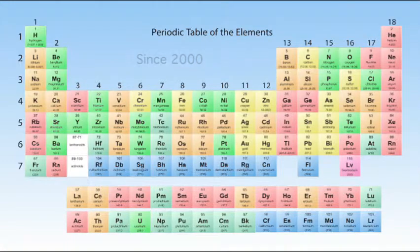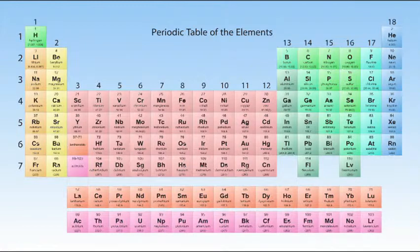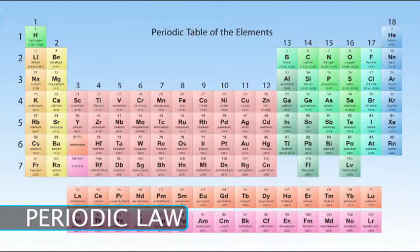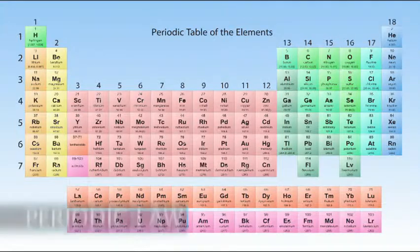When elements are arranged in order of increasing atomic number, there is a pattern in their chemical and physical properties, referred to as the periodic law. That law led to the modern periodic table.